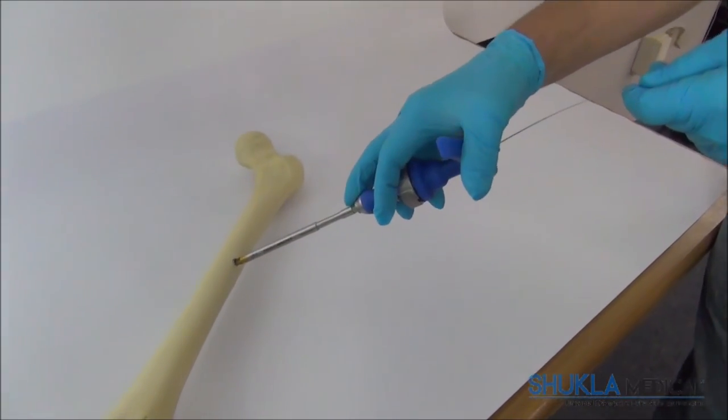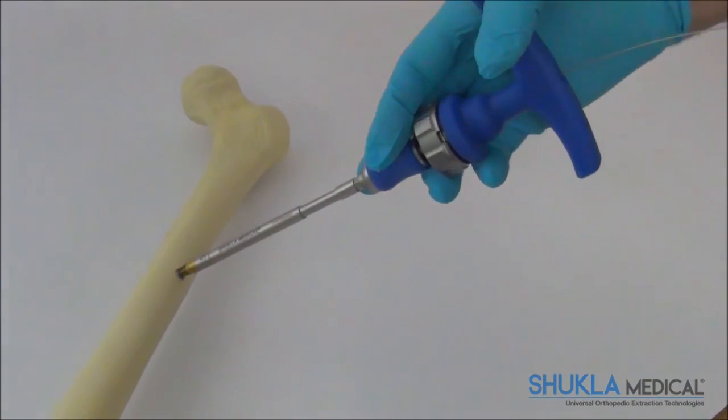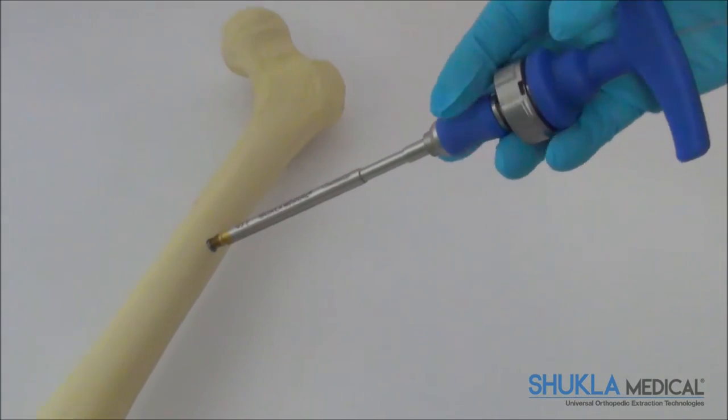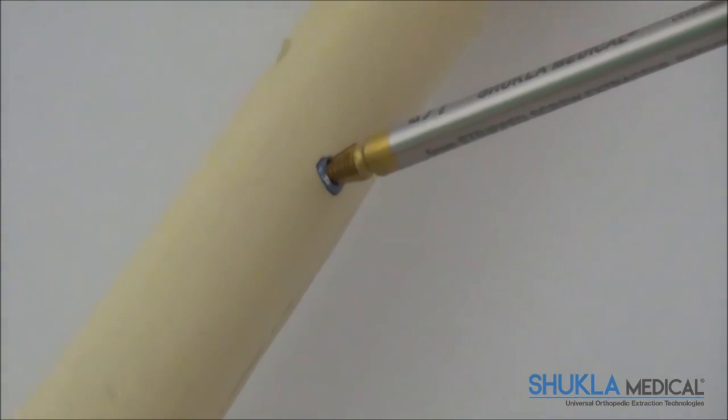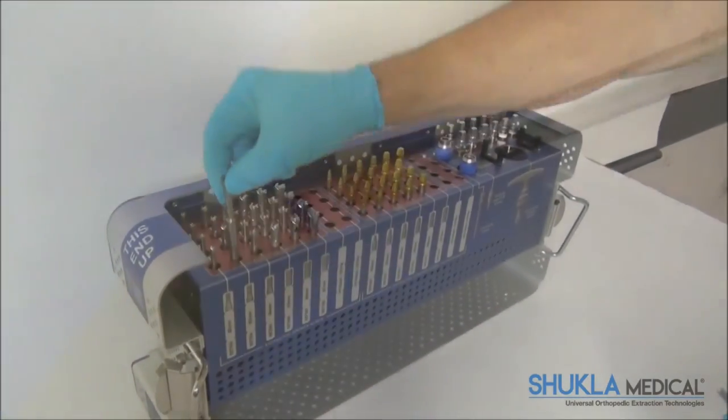The broken and stripped screw extractors, except the 2mm stripped, are cannulated to either allow the surgeon to follow a K-wire down to an embedded screw or guide the stripped screw extractor into the well of a stripped screw.